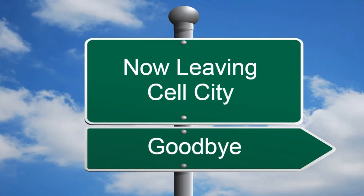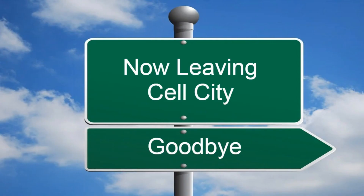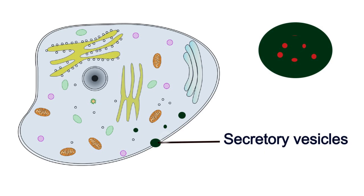Alright, you have just finished the tour of cell city. Hope it was enjoyable, and now you will leave the city on a secretory vesicle. These vesicles are how materials leave the cell and travel to other cells or out of the body.